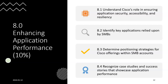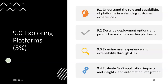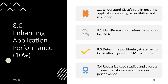The eighth domain is Application Performance. Engineers need to understand Cisco's role in ensuring application security, how Cisco devices are accessible to different partners, and system resilience — meaning the system cannot be easily broken. They must identify key applications relied upon by SMBs and determine positioning strategies, as most questions come from positioning strategies. They also review case studies and success stories.